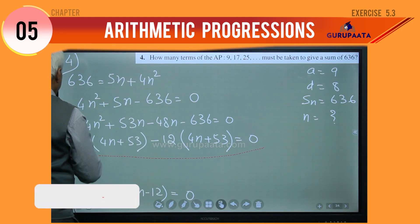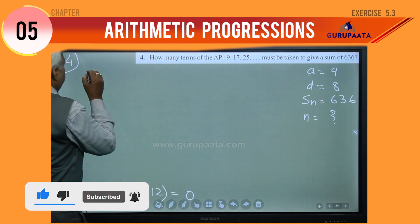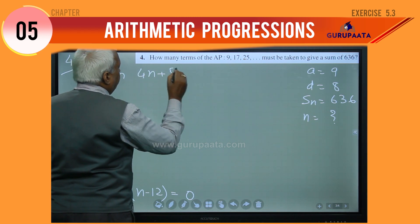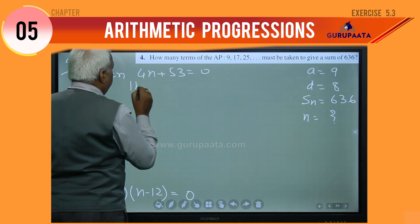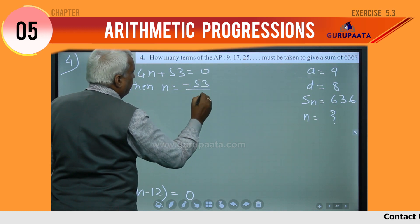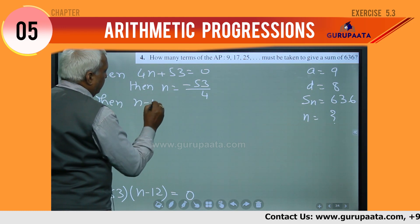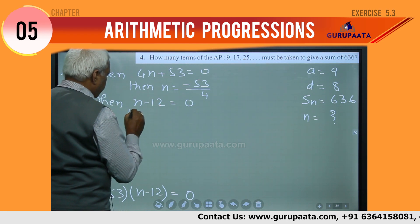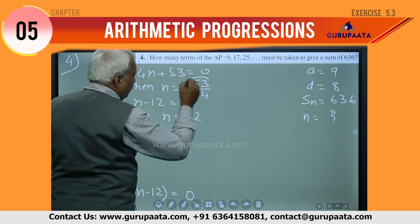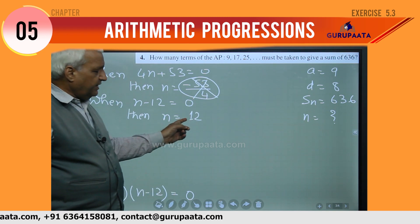We will do the calculation. When 4n plus 53 equal to 0, then n will be minus 53 by 4. When n minus 12 equal to 0, then n will be 12. As minus 53 by 4 is a negative number, we will not use it. Our answer, n, is 12.